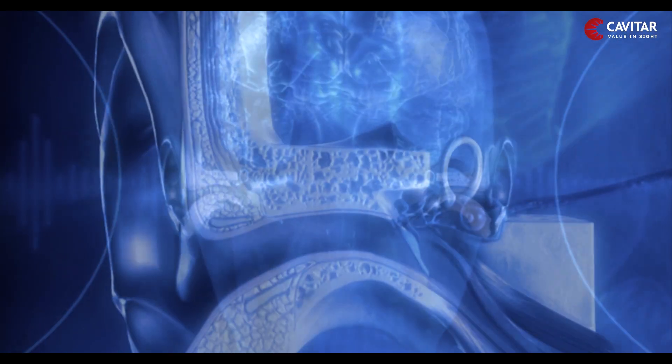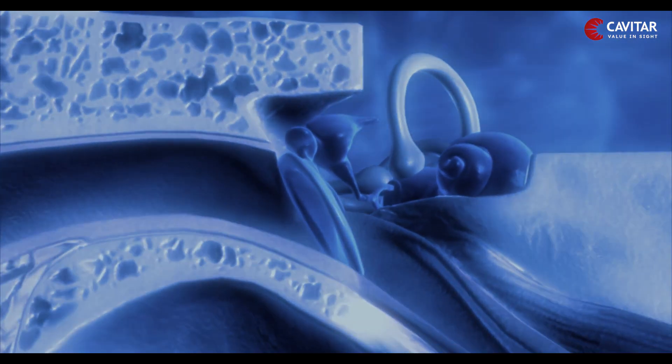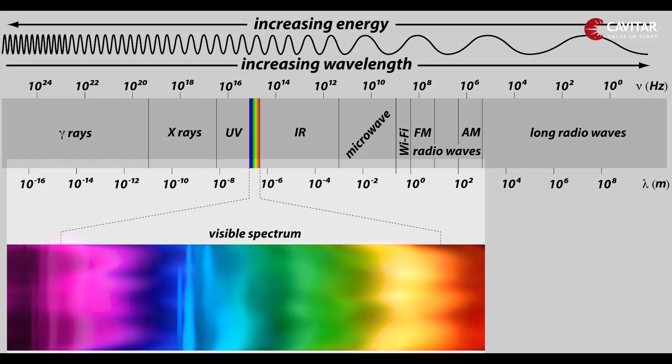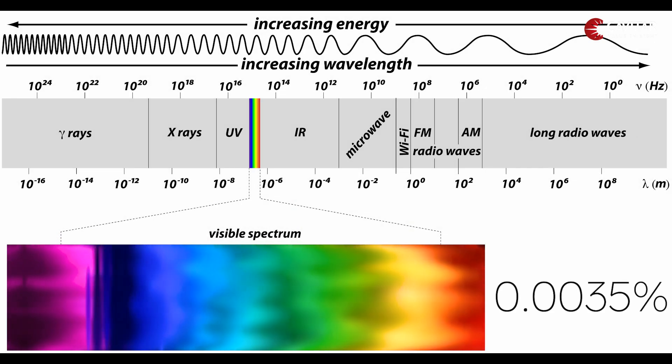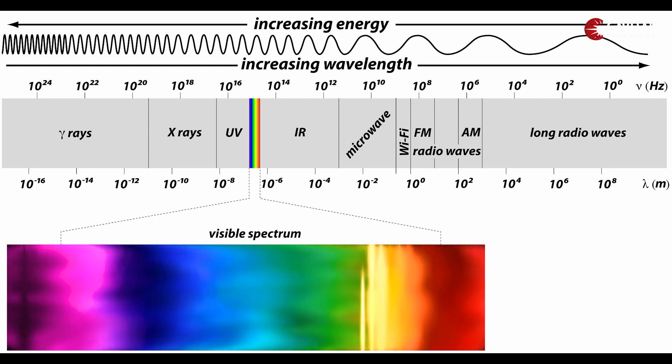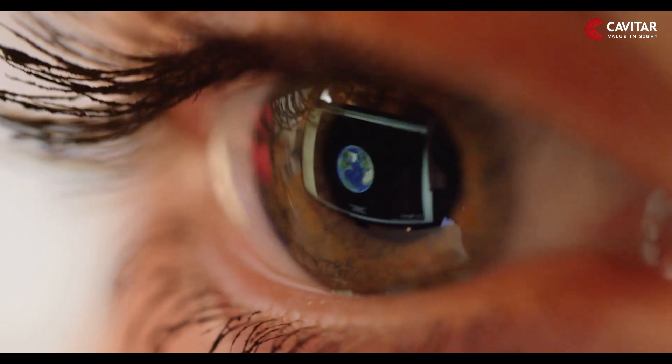Anything beyond that simply does not exist to us. Similarly, our vision is limited to a very minute portion of the available electromagnetic radiation spectrum — we can see from 380 to 700 nanometers, which is the visible spectrum of light. This is quite a small number.